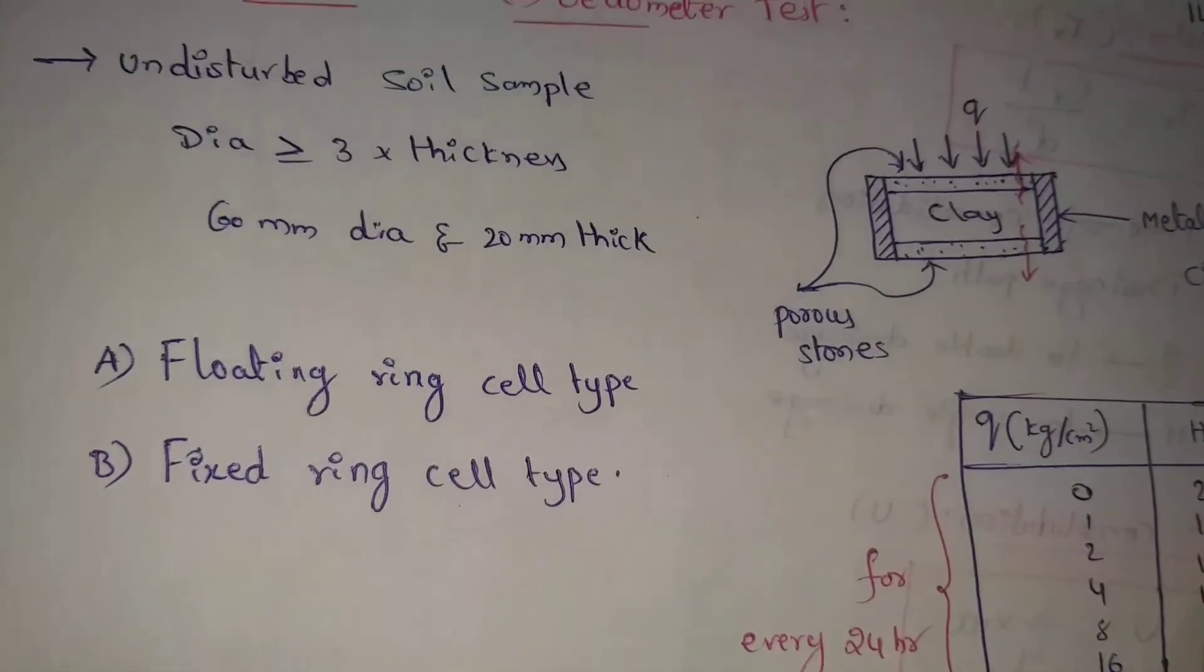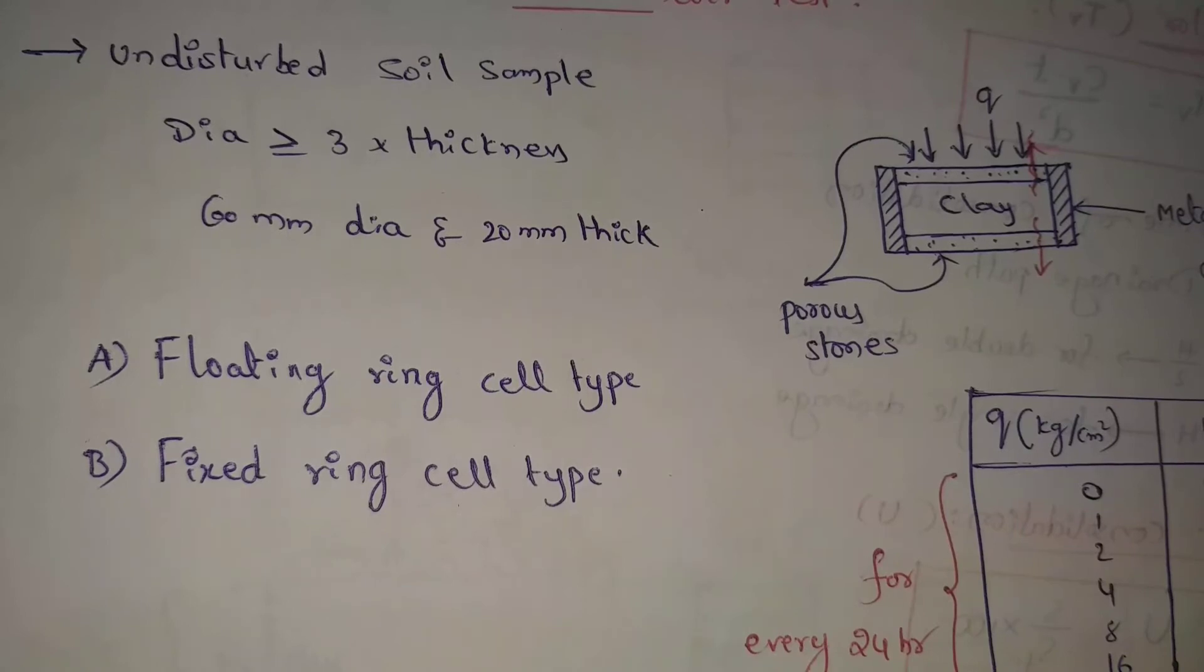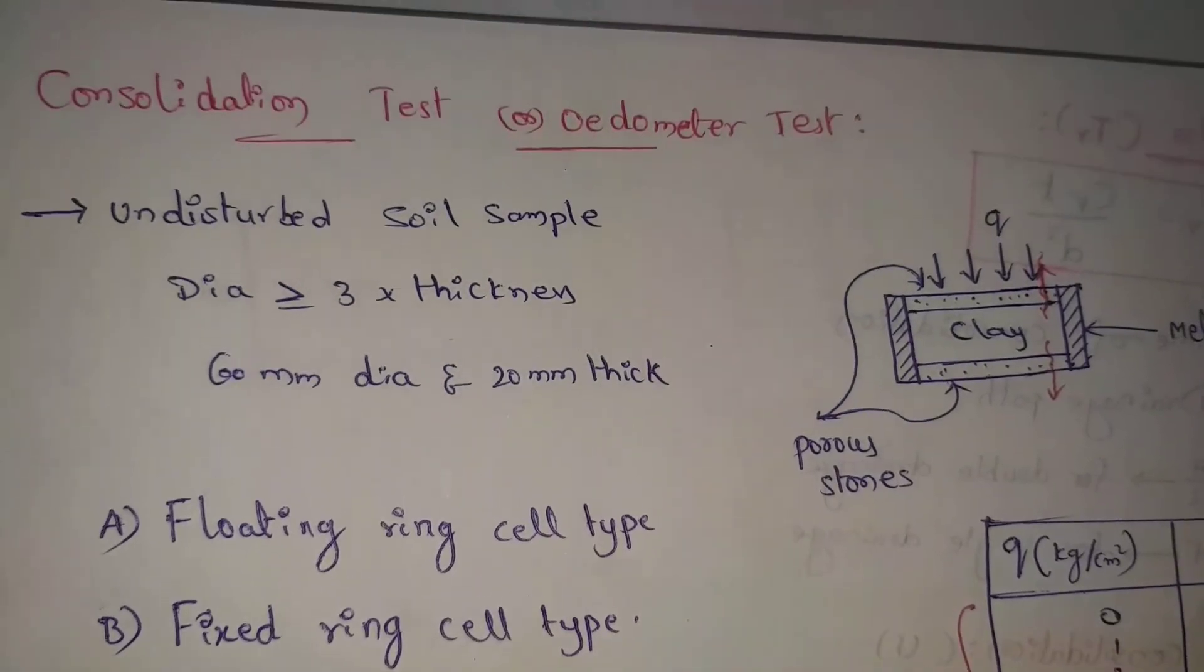The floating ring cell type has the advantage of having a smaller effect of friction between the specimen ring and the soil. This is one advantage of floating ring cell type.